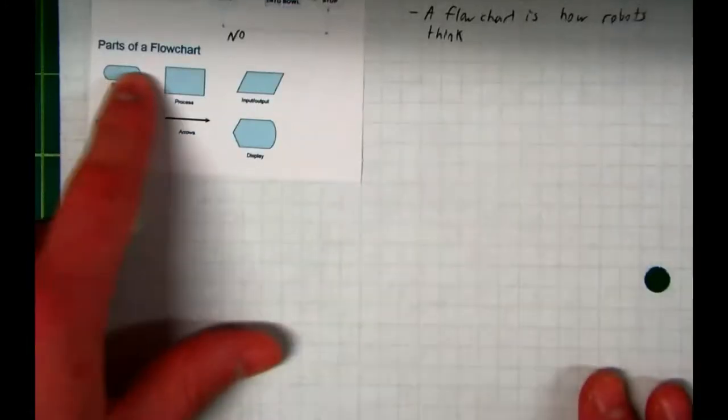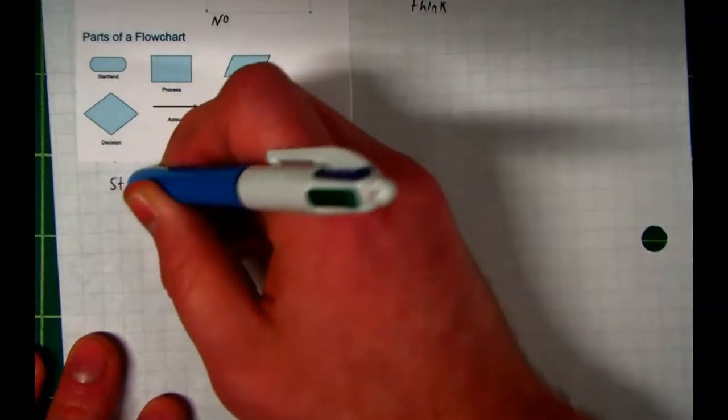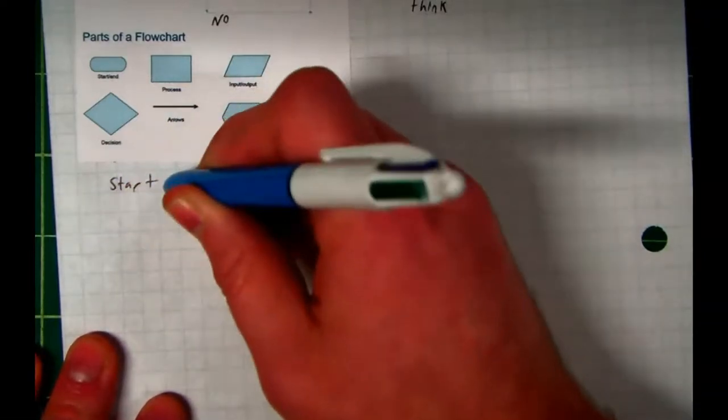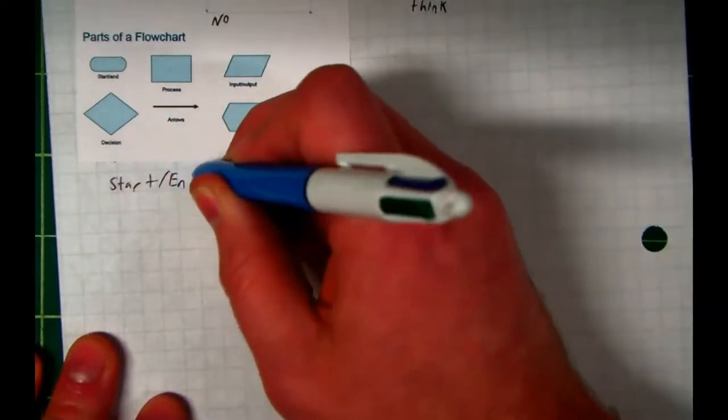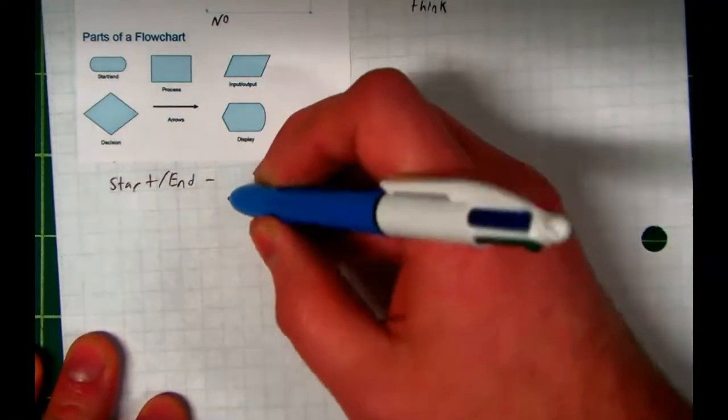So let's talk about these different symbols. The first one we're going to talk about is the start-end symbol. Now if you can't tell, it is what we call a rounded rectangle.